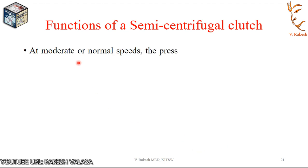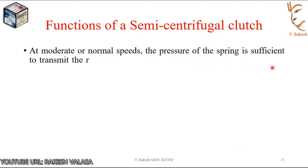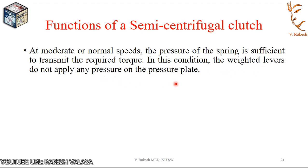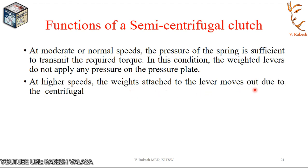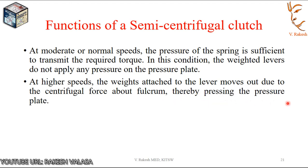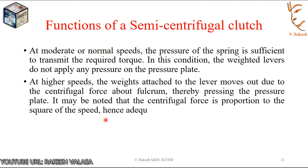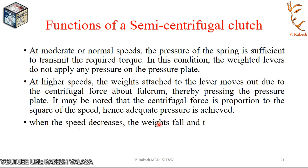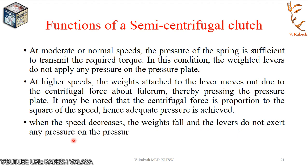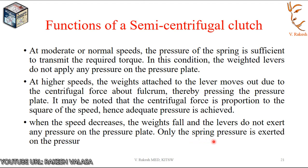The maximum centrifugal force on the pressure plate can be adjusted by the adjusting screw D. Functions: at moderate or normal speeds, the spring pressure is sufficient to transmit the required torque, and the weighted levers do not apply any pressure on the pressure plate. At higher speeds, the weights attached to the lever move outward due to centrifugal force above the fulcrum, thereby pressing the pressure plate. The centrifugal force is proportional to the square of the speed, hence adequate pressure is achieved. When the speed decreases, the weights fall, the levers do not exert any pressure, and only spring pressure keeps the clutch engaged.